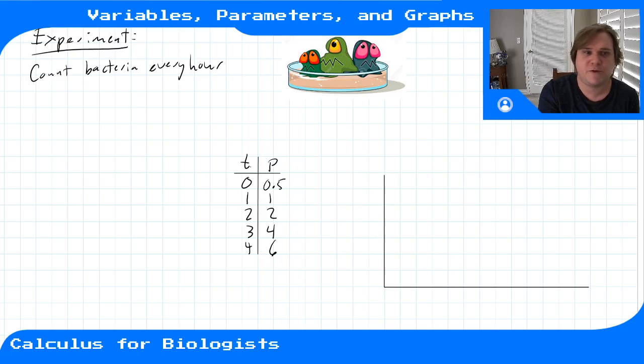So then in this experiment you've just kind of reduced reality down to these two lists of numbers. And so we call each of these quantities a variable. A variable is a quantity that changes over the course of an experiment.